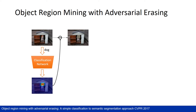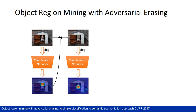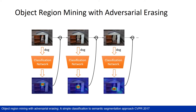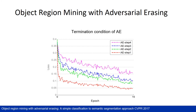we erase the identified regions and retrain the network with the erased image, and then new object regions will be discovered. We continue this step for several times and merge the identified regions from multiple steps as output. Such operation tries to challenge the classification network to discover some evidence of a specific category until no detectable evidence is left.